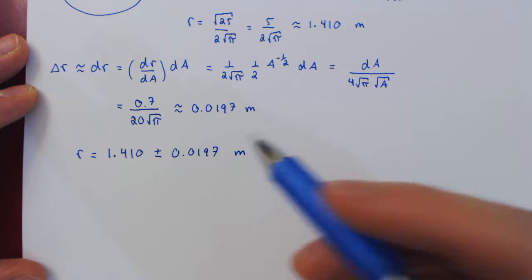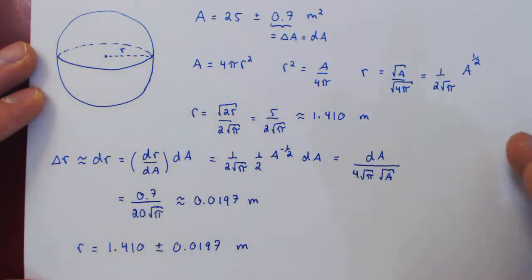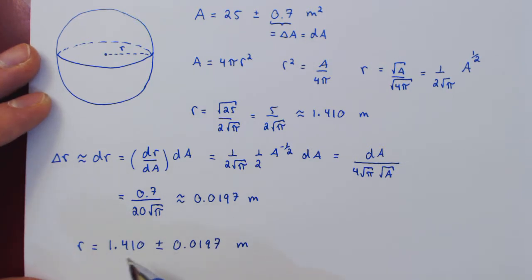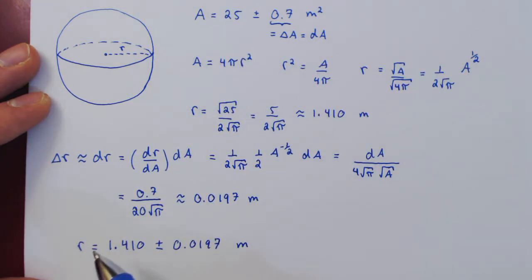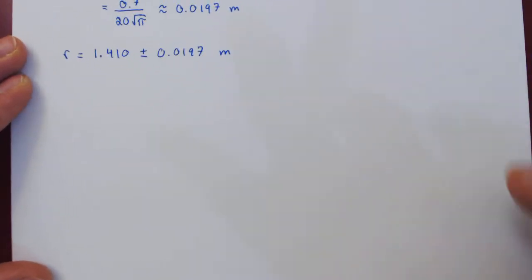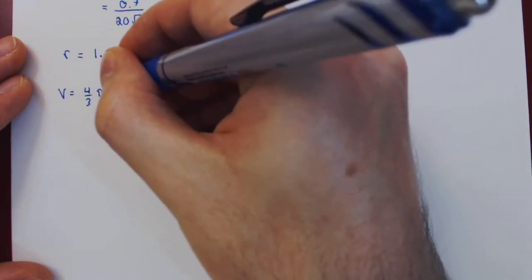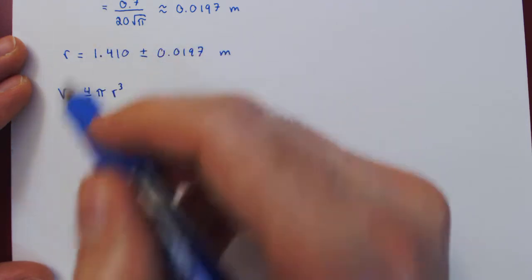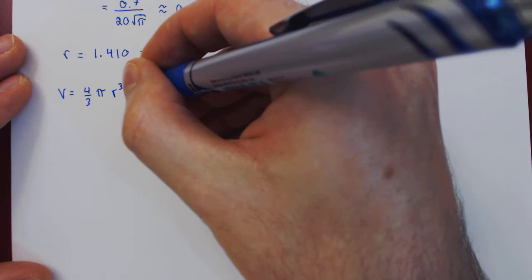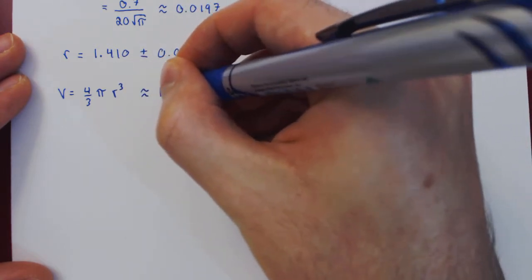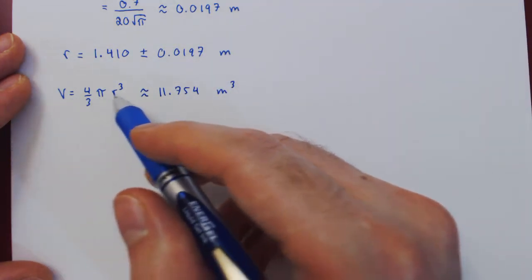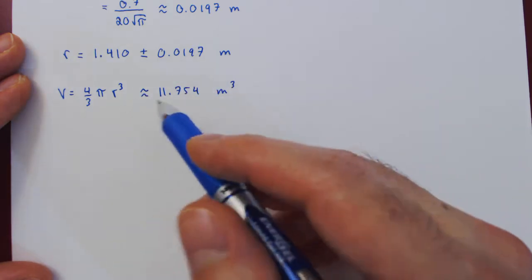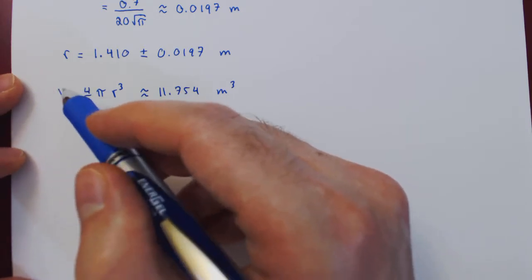But that was not the objective — the objective was to find the volume of the sphere with uncertainty. Now that we have the radius with uncertainty, we no longer have to connect V with A, but can instead connect V with the better variable, r. The volume of the sphere in terms of r is (4/3)πr³, which gives approximately 11.754 meters cubed.